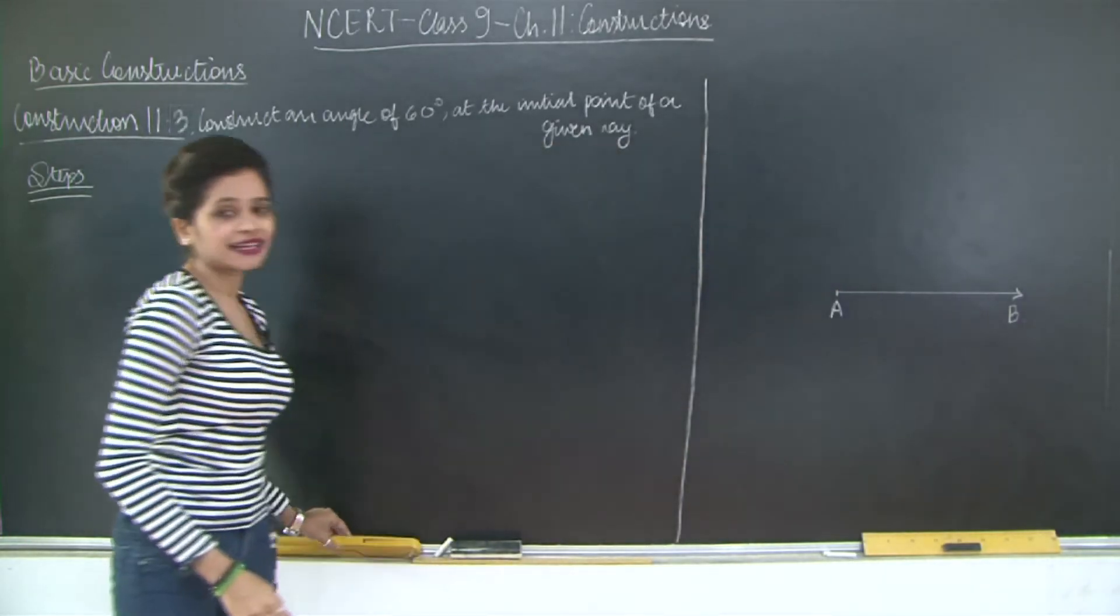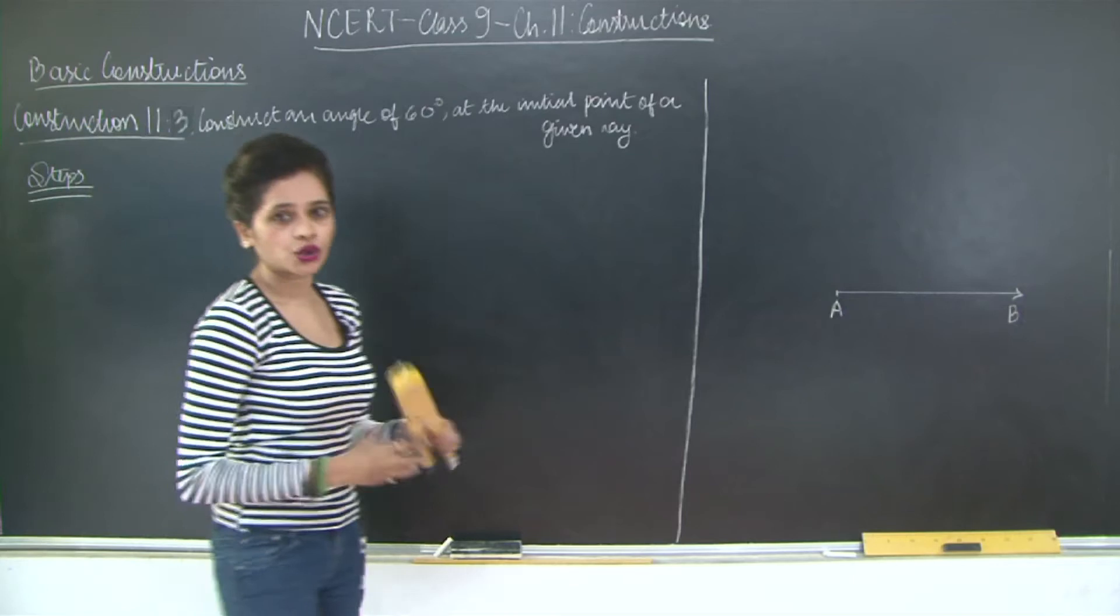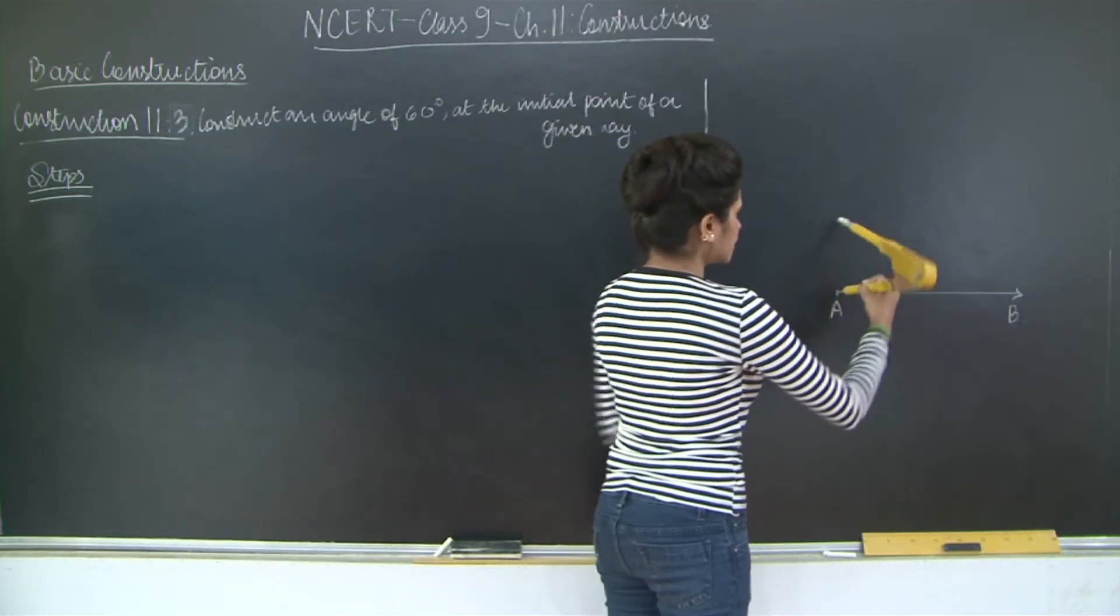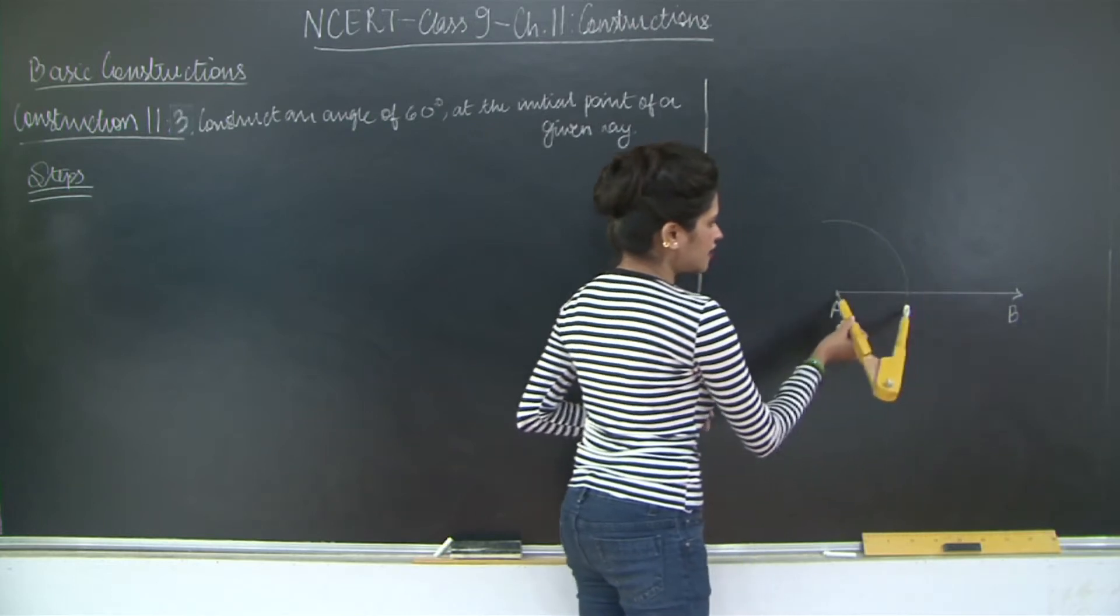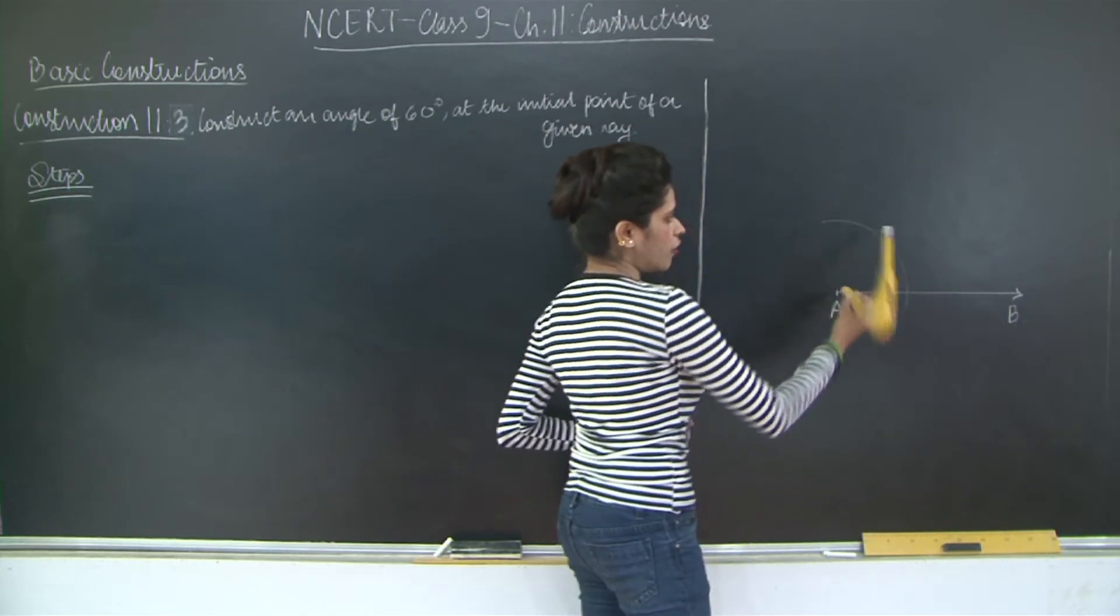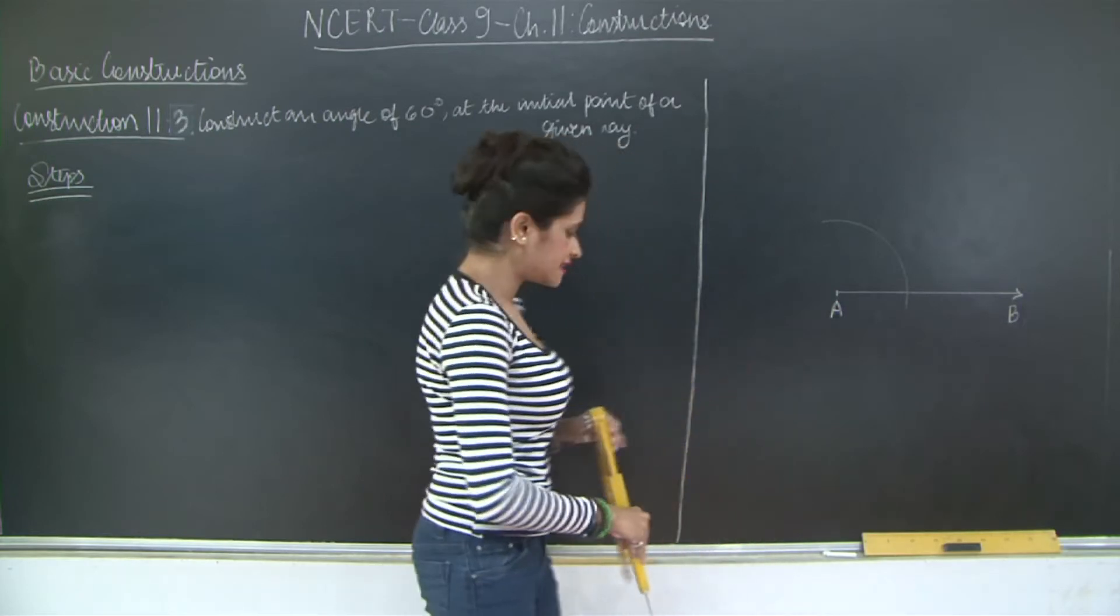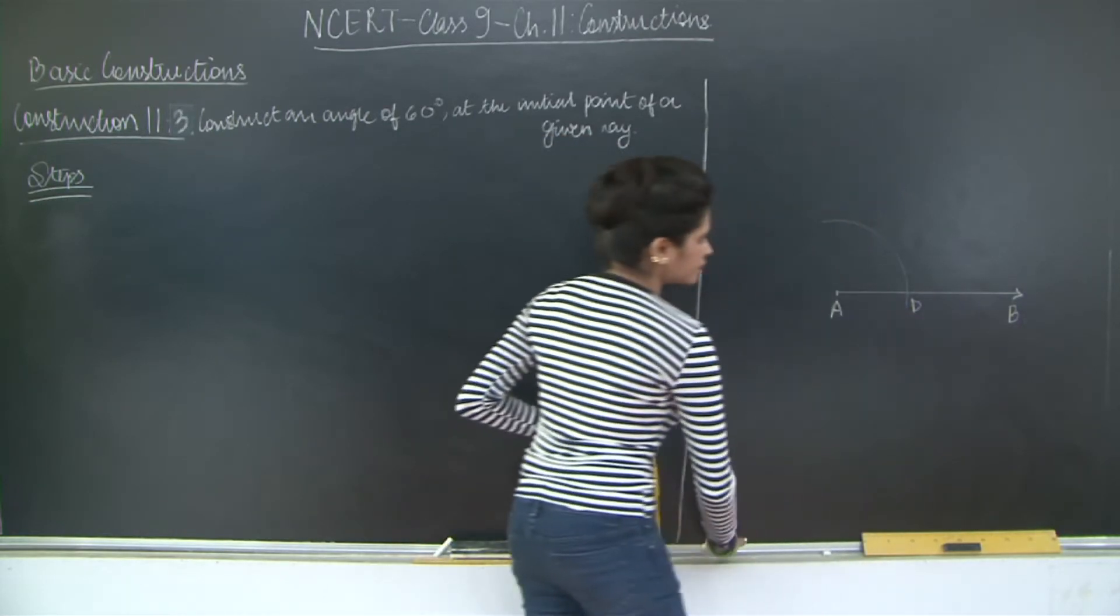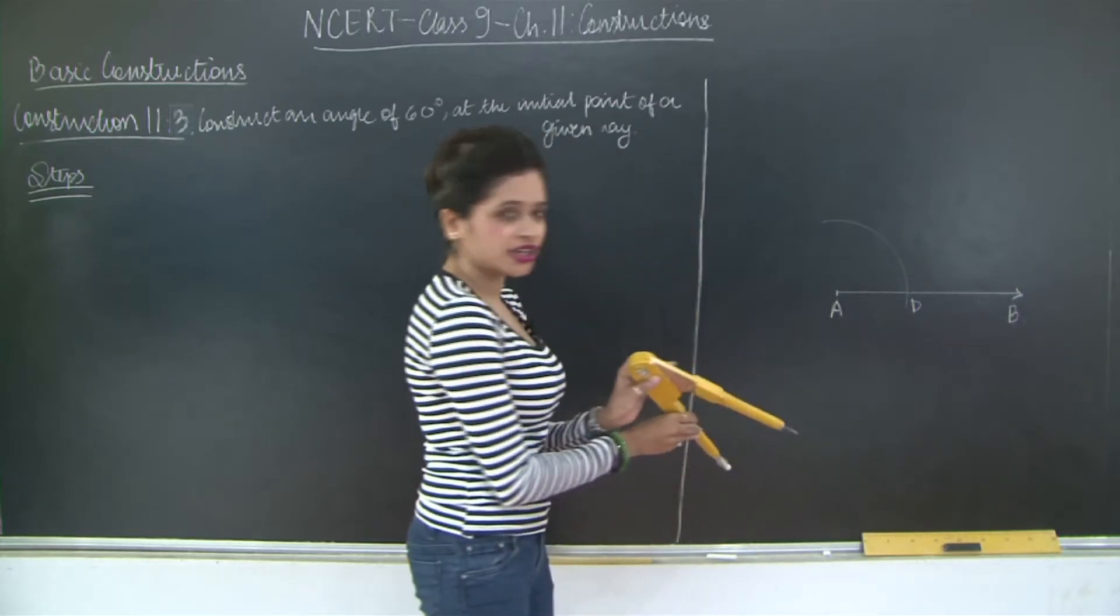So how will we do this? You will notice that it is a very easy construction. With A as center, you just construct any arc such that it intersects AB at some point D.